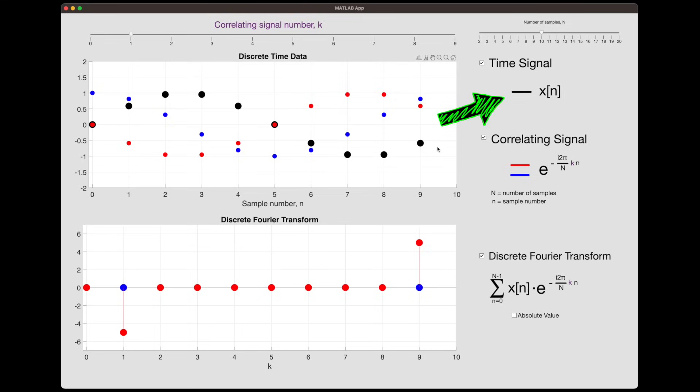Well, first off, if x of n is a real signal, that is, it's not complex, and we take the absolute value of the FFT of x of n, then the resulting spectrum is mirrored between the positive and the negative frequencies. And we can see why this is the case here. Let me hide the time signal so we can just see the correlating signal. We know that when k equals zero, this corresponds to zero frequency. It's neither positive nor negative.